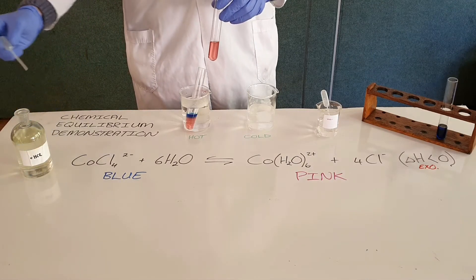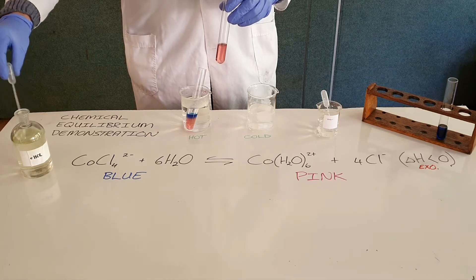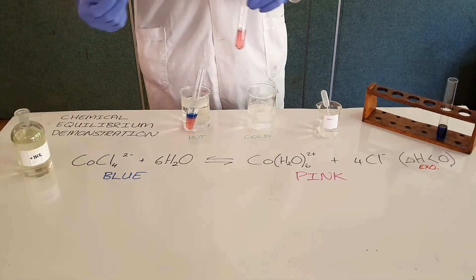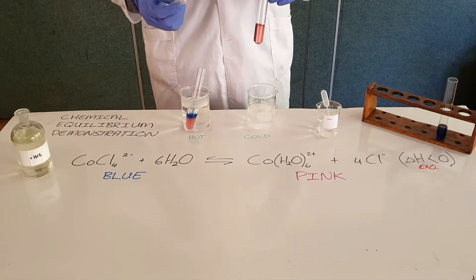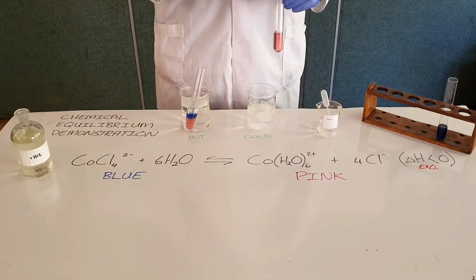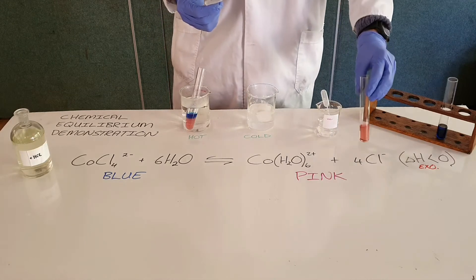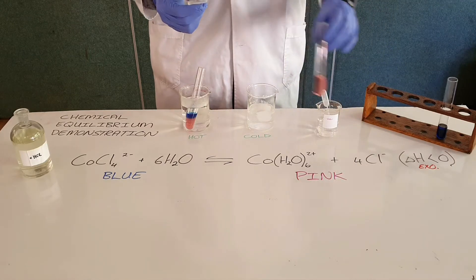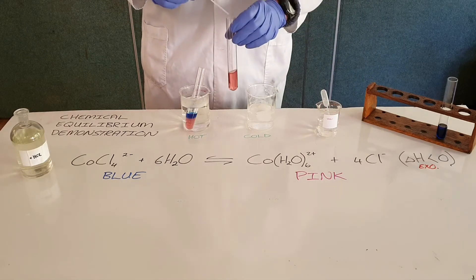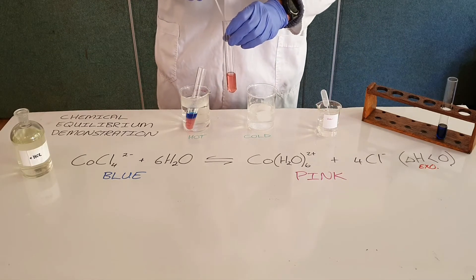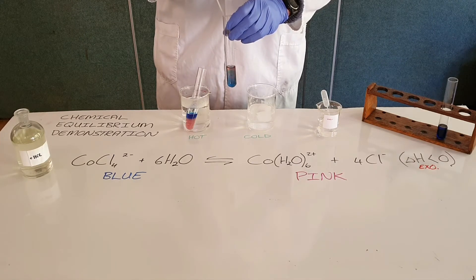Now I'm going to demonstrate that by increasing the concentration of one of the products — in this case, chlorine ions. We know that hydrochloric acid, when it ionizes, forms hydrogen ions and chlorine ions. So by adding hydrochloric acid to the solution, I am adding a common ion — which is why this is called the common ion effect. That increases the concentration of one of the products, which means we should favor the reverse reaction. And we can see the solution turning more blue.